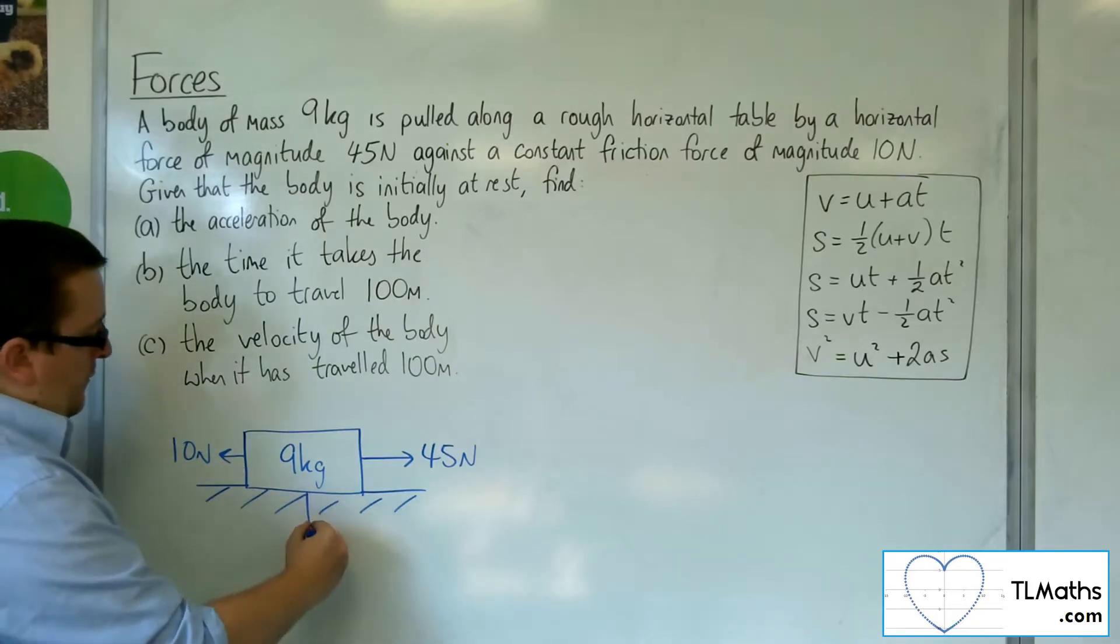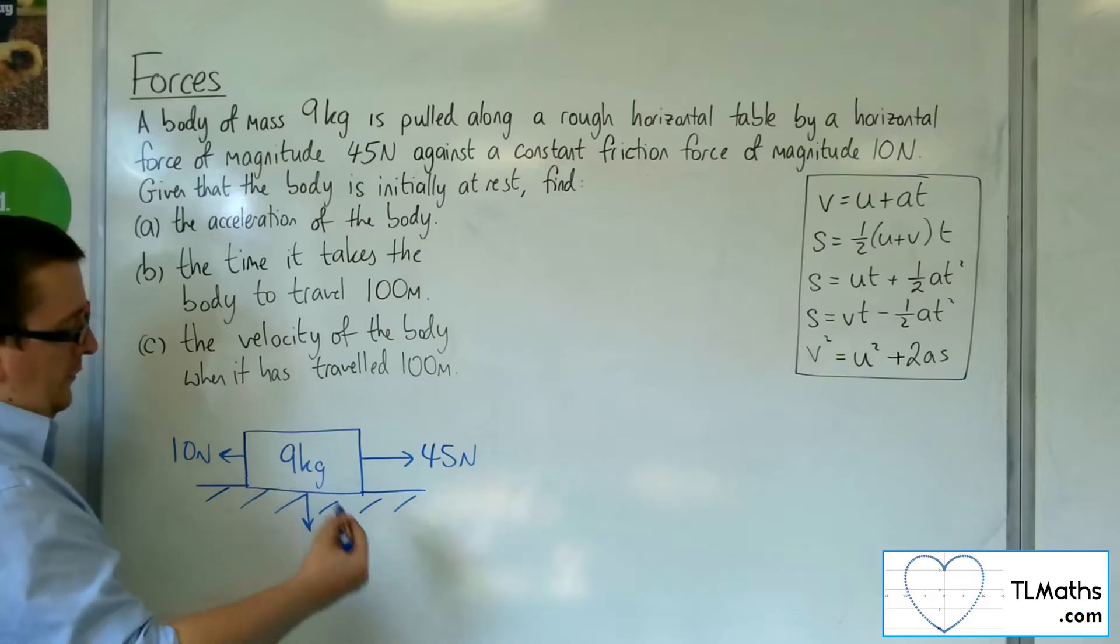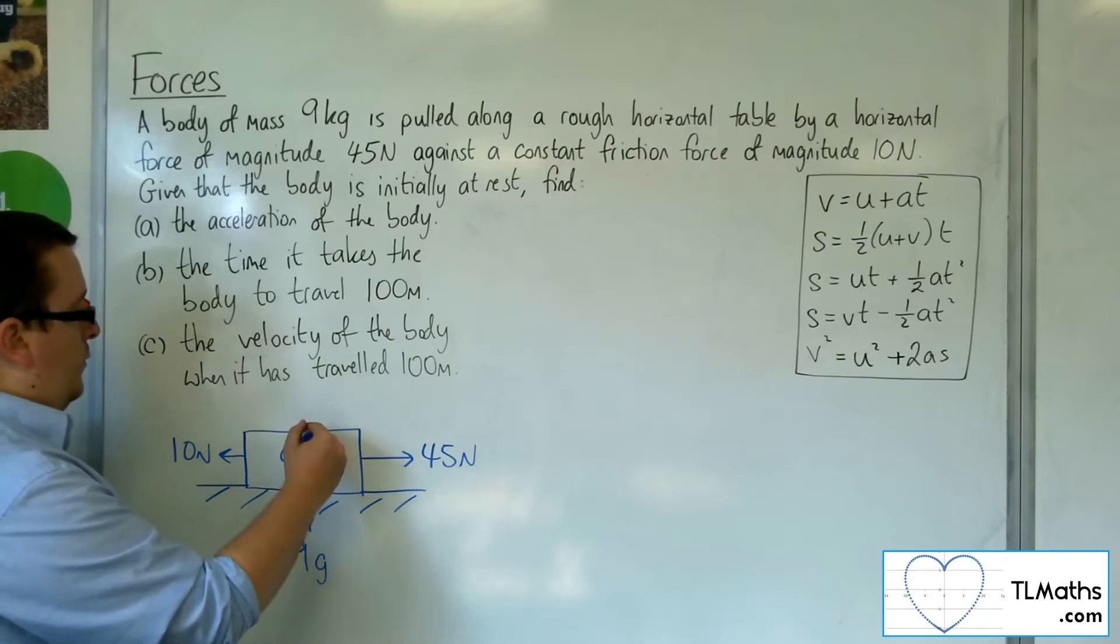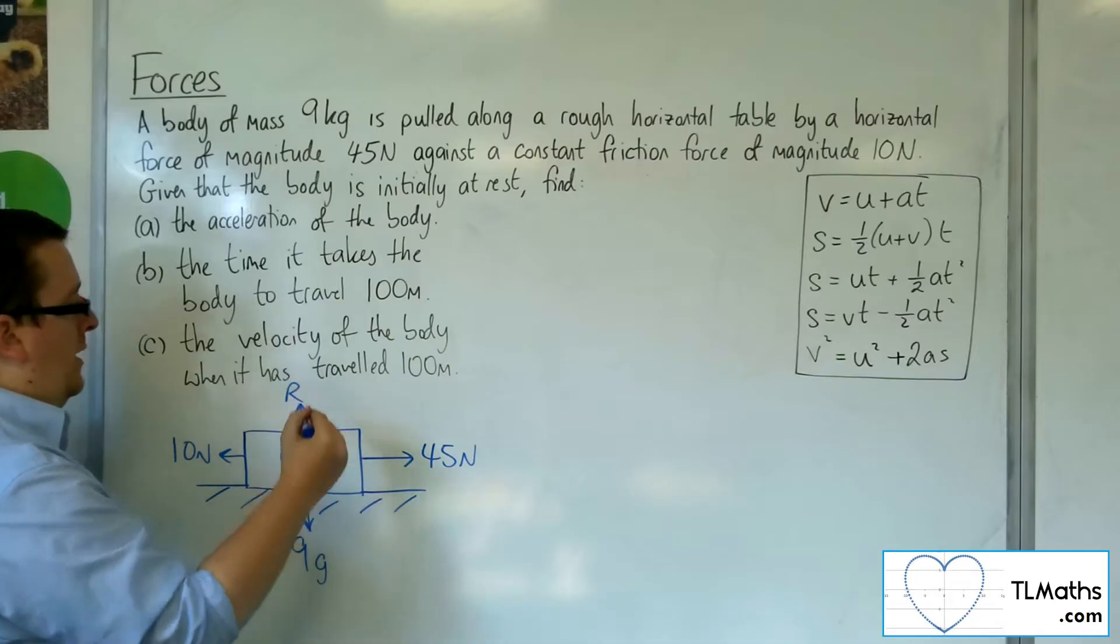We would also have the weight working vertically downwards, which is mass times gravity, so 9 times g. And we'd have a normal reaction force as well.